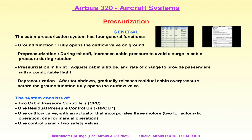Im Flug wird die Kabine nach einem vorgefertigten Ablaufplan der Software angepasst – eine Art Datenbank, die je nach Flughöhe vorgibt, wie hoch die Kabinenhöhe sein soll. Das ist ein vorprogrammiertes Flugprofil. Nach der Landung – After Touchdown – beginnt der umgekehrte Prozess: Das Outflow Valve öffnet sich stückweise, sodass wir am Boden völligen Druckausgleich haben.